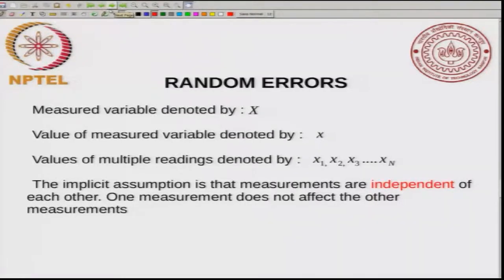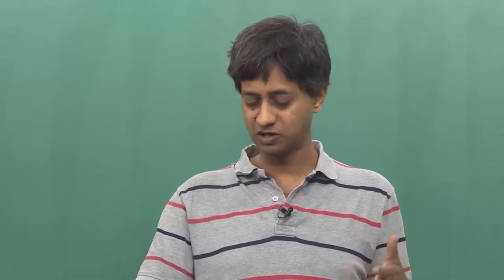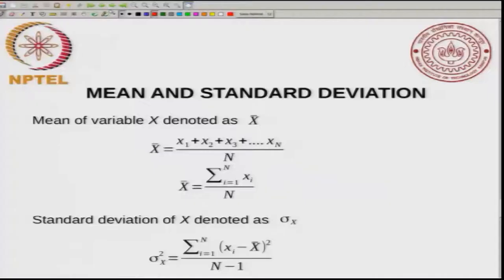Suppose you are measuring a variable, denoted by X. So X might represent the volume of the titrant. The value of a measured variable is denoted by little x. If you make multiple readings, then you see different values like X₁, X₂, X₃, and so on up to Xₙ. The implicit assumption in all that we are doing is that the different measurements are independent of each other — one measurement does not affect the value of the other measurements. When you do a titration once and then a second time, the value from the first titration does not affect what happens in the next titration.